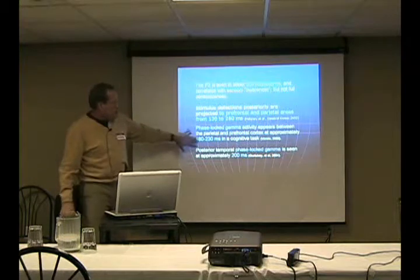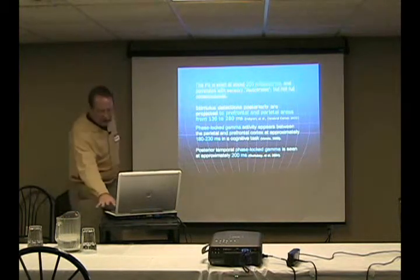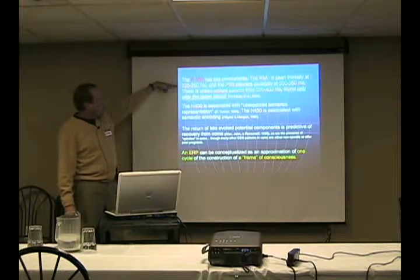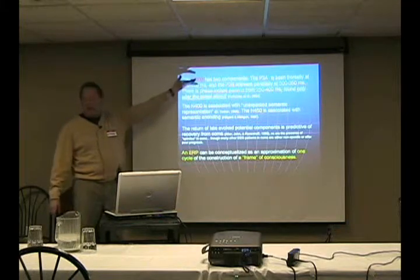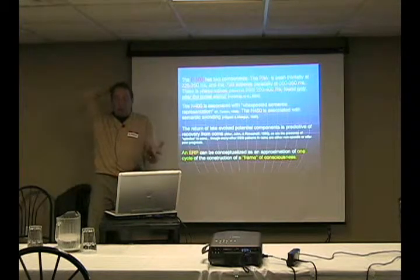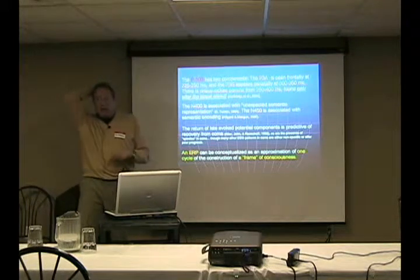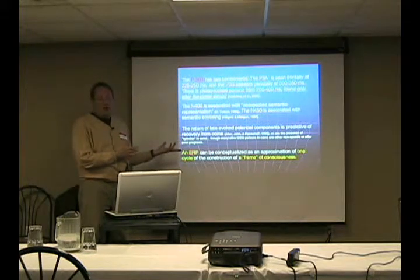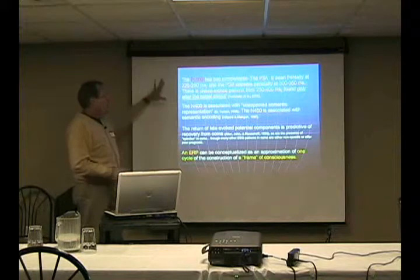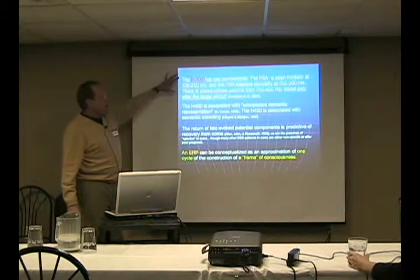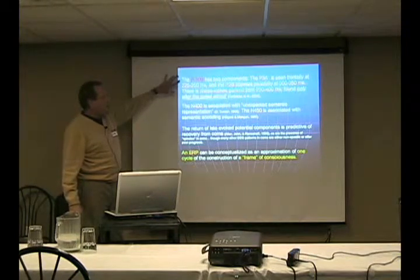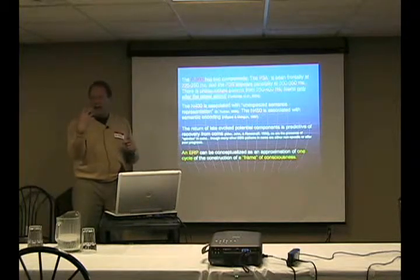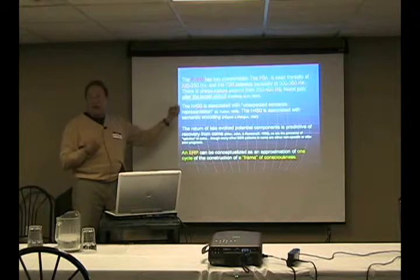So at this 200 millisecond point, we've got phase lock gamma at about 200 milliseconds. The P300 has two components. One just after the 200 millisecond point frontally, that's the P3A. The P3B is at about 300 milliseconds at the back of the head, which is the P300 that we showed you on the person who couldn't read and comprehend. This big burst of gamma happens at about the 300 millisecond point, but it's only after a target stimulus. You can receive lots of inputs, but until it's a relevant input, this gamma won't happen.